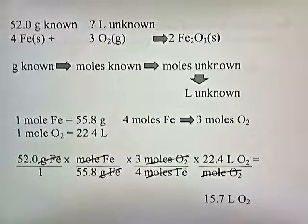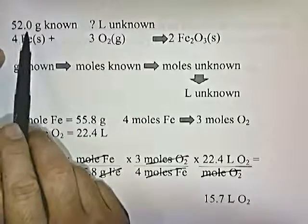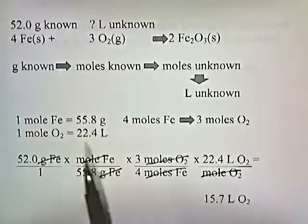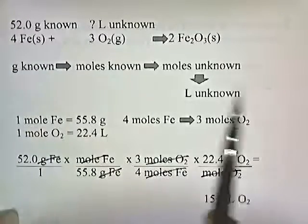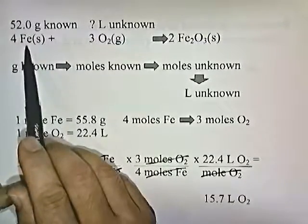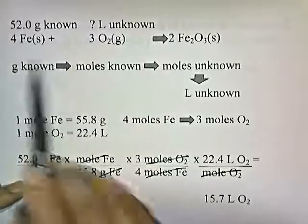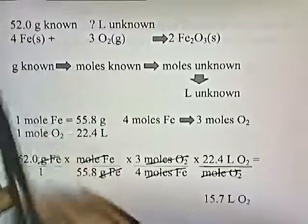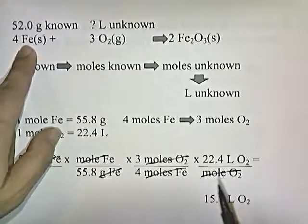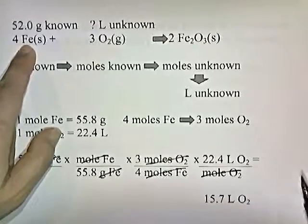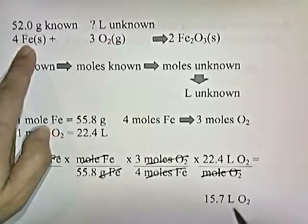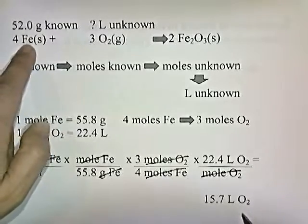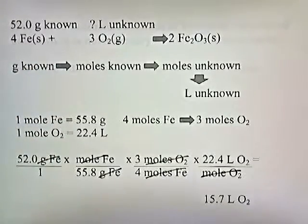What that means is that if you want to react all of the iron to produce the product, you need 15.7 liters of oxygen to go with it. So if you have 52 grams of iron as starting material, it needs at least 15.7 liters of oxygen if you want to completely react all of this iron to make iron oxide.